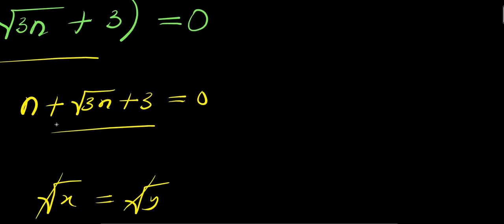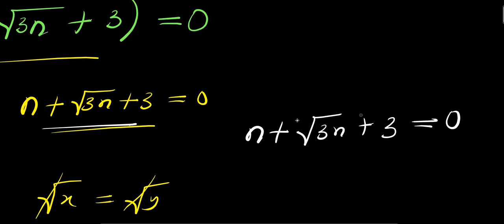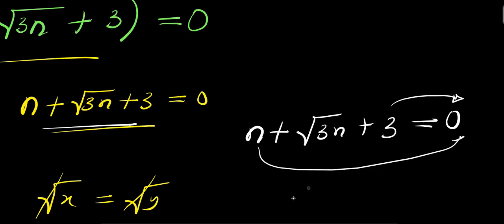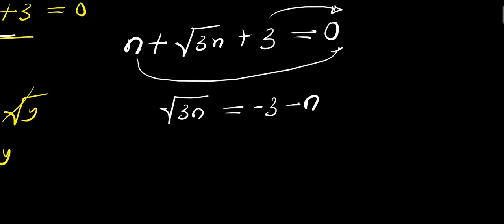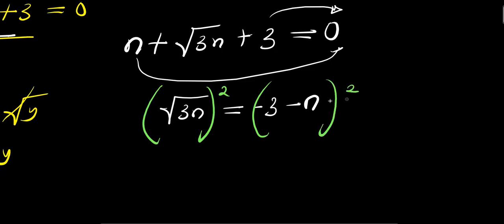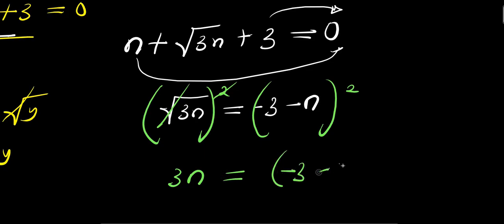We also have the other factor: n plus square root of 3·n plus 3 equals 0. Moving n and 3 over, I have square root of 3n equals negative 3 minus n. Now I square both sides of this equation.